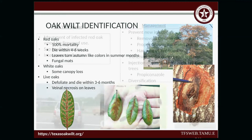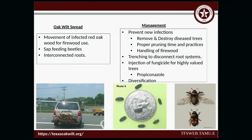Oak wilt spread: movement of infected red oak wood — or really any wood — is a concern. We tell people it's easier just not to move firewood from trees that died of oak wilt. Oak wilt spreads by sap-feeding beetles — really tiny little beetles, about the size of the tip of your pen, and it's multiple species, not just one. So we can't just trap them and say we're done. The live oaks also have those interconnected root systems. To manage it, we try to prevent new infections — removing and destroying diseased trees, especially red oaks.